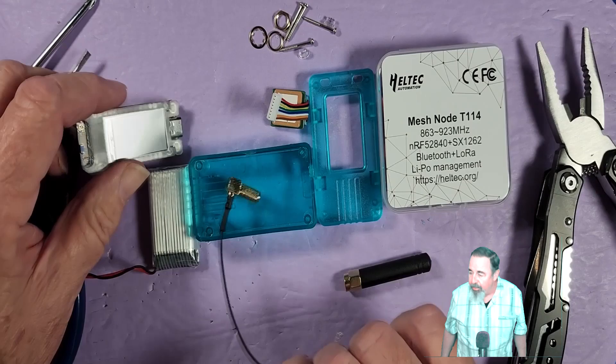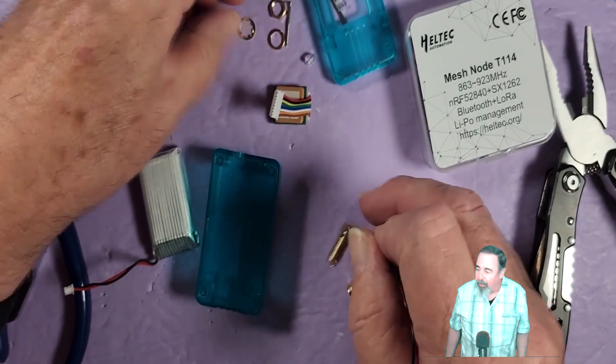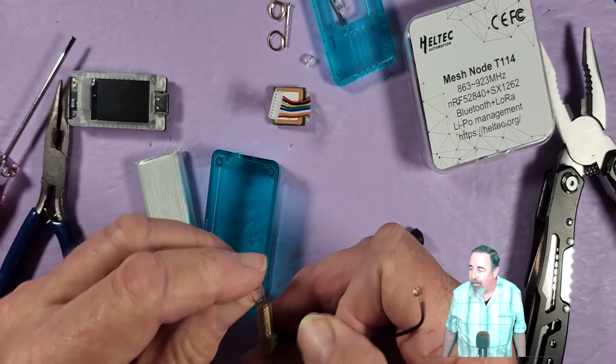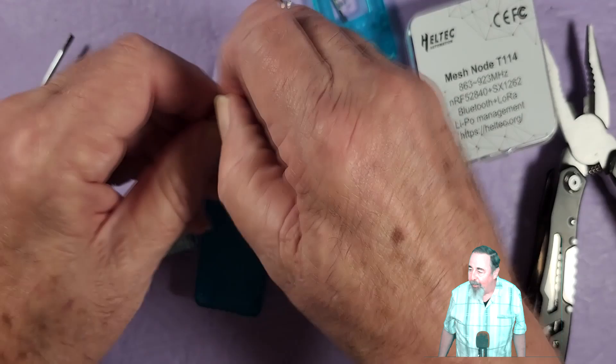First off I want to make sure the antenna is attached, so we're going to go ahead and mount the antenna mount onto the case first. You want to get that little lock washer on there.